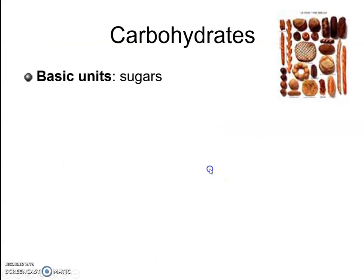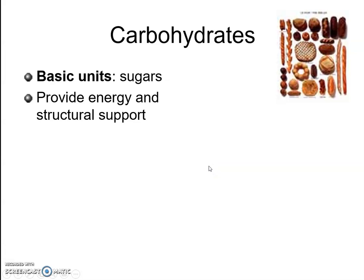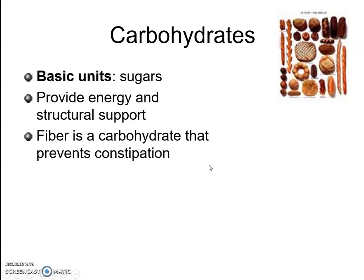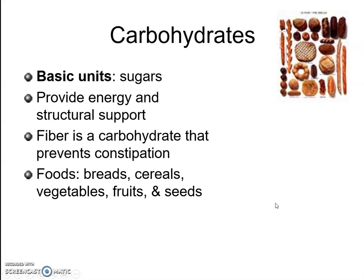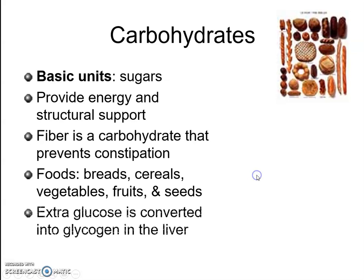Carbohydrates are the basic units of sugars. Sugars provide energy and structural support in cells, and fiber is a carbohydrate that prevents constipation. Foods that contain carbohydrates include breads, cereals, vegetables, fruits, and seeds. Extra glucose that we don't use can be converted into glycogen, which is then stored in the liver.